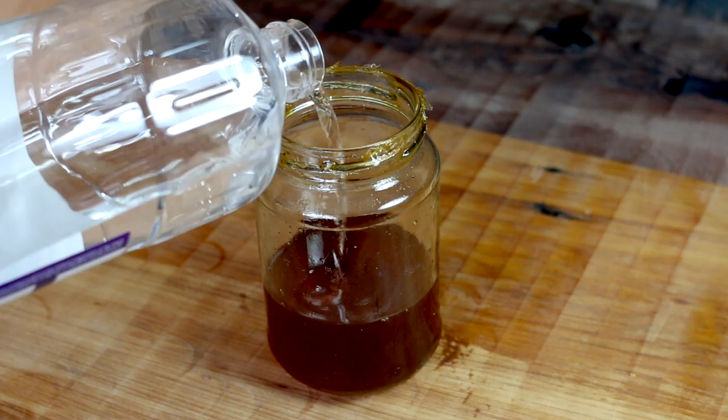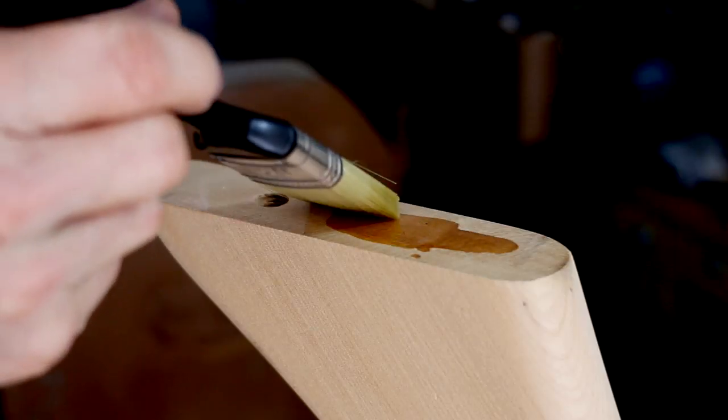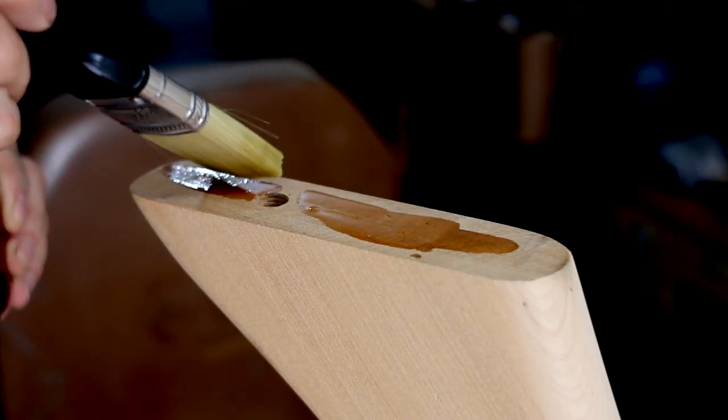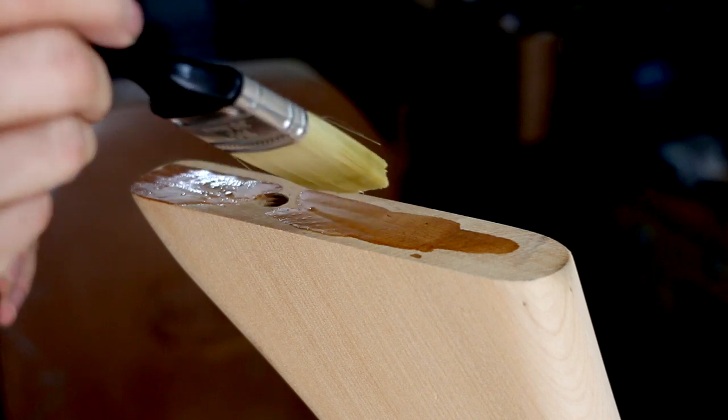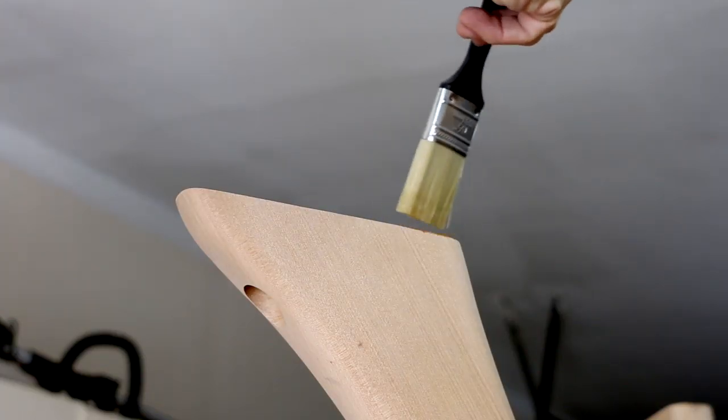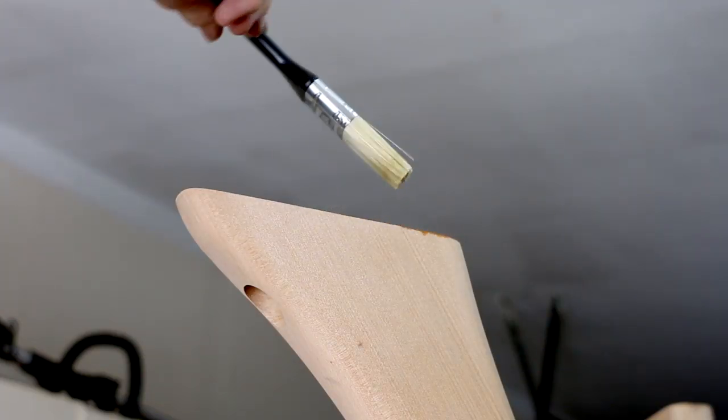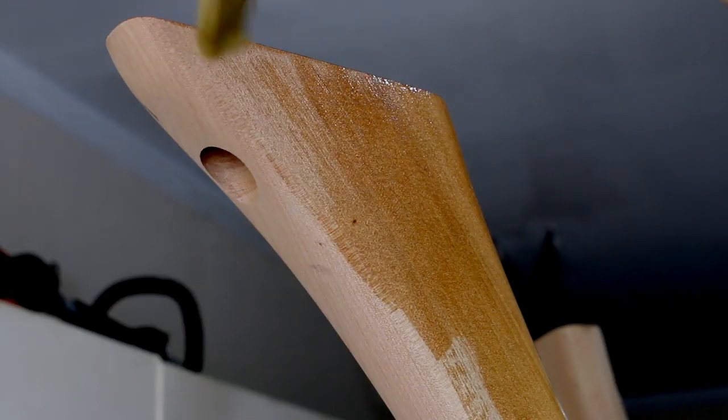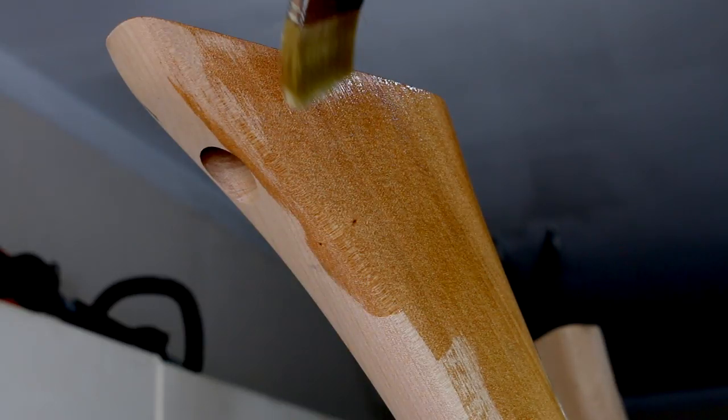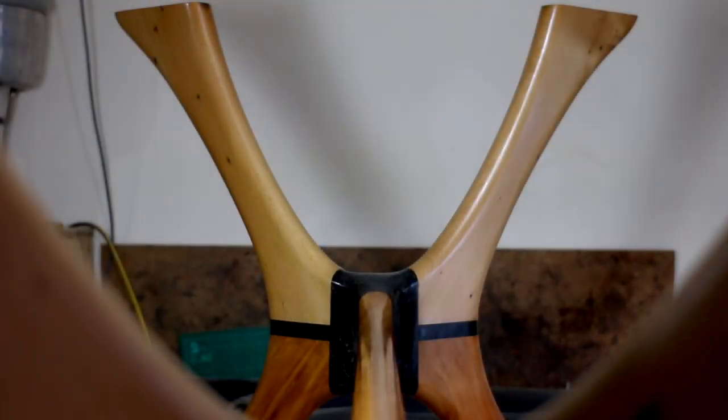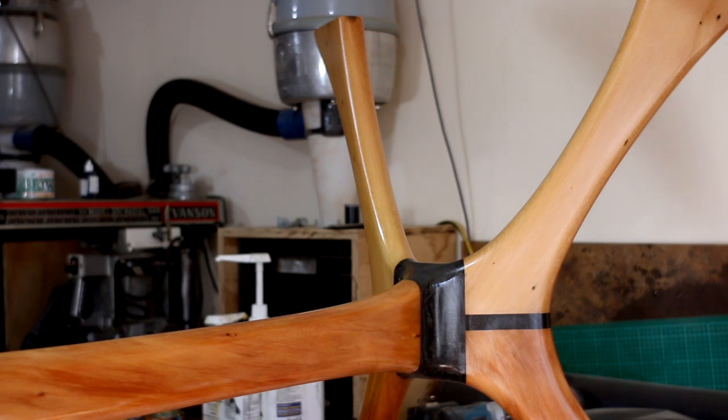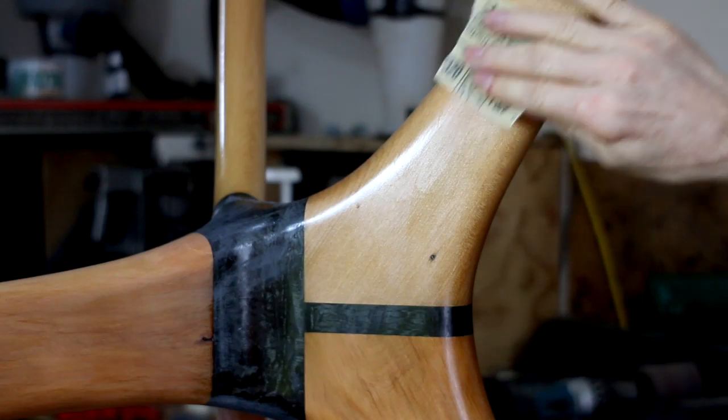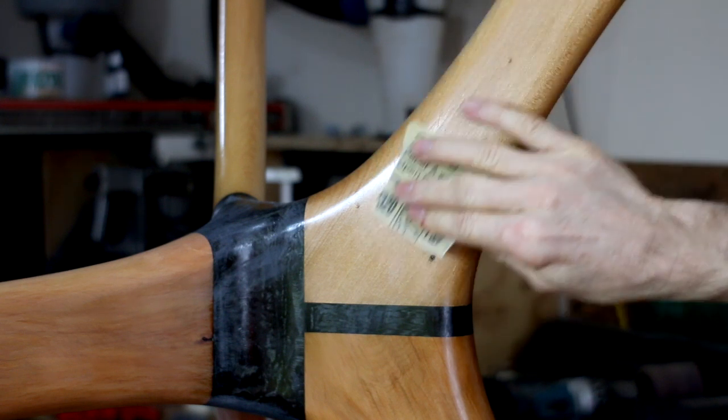I made up some shellac and I thinned it down a little bit for the first coat. That came up really nice. And I sanded that down with 320 grit and I repeated the process until it was ultra smooth.